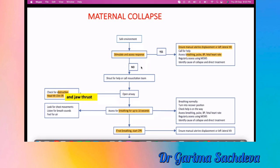If the patient is not responsive, shout for help and call the resuscitation team — calling for help is always the first step. Then proceed with ABCDE: assess the airway for obstruction and perform head tilt, chin lift, and jaw thrust to open the airway. Then assess for breathing by looking, listening, and feeling for chest movements, breath sounds, and air from the nostrils — assess for only 10 seconds.